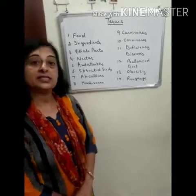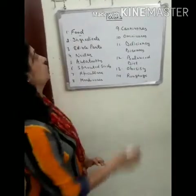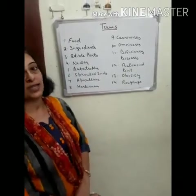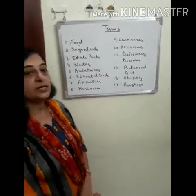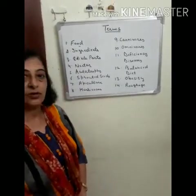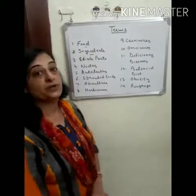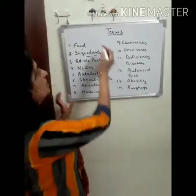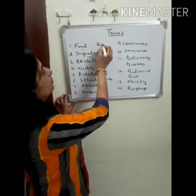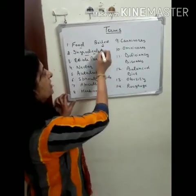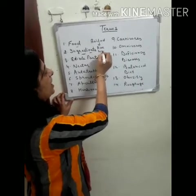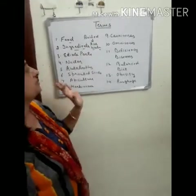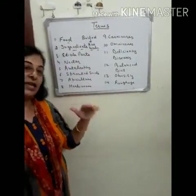Now we will discuss various scientific terms. First of all, food — it is a substance eaten by living beings to get energy. To prepare food, we need some materials, and these materials are known as ingredients. For example, boiled rice is a food, and to prepare boiled rice, rice and water are the ingredients.